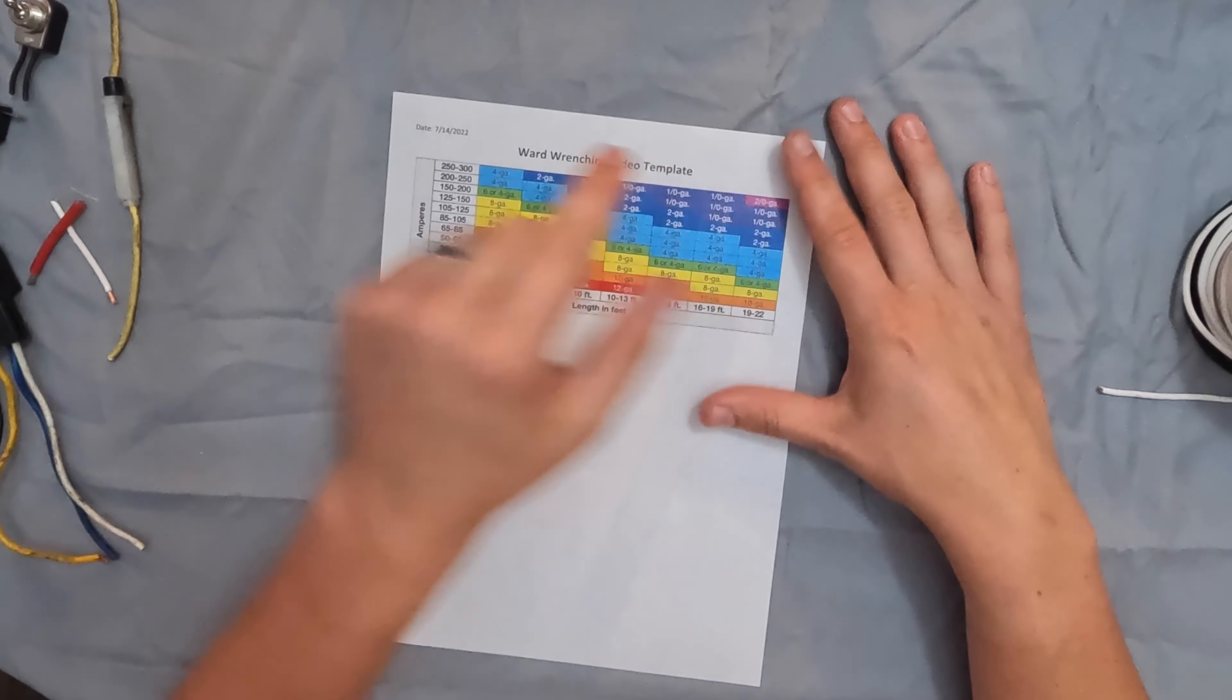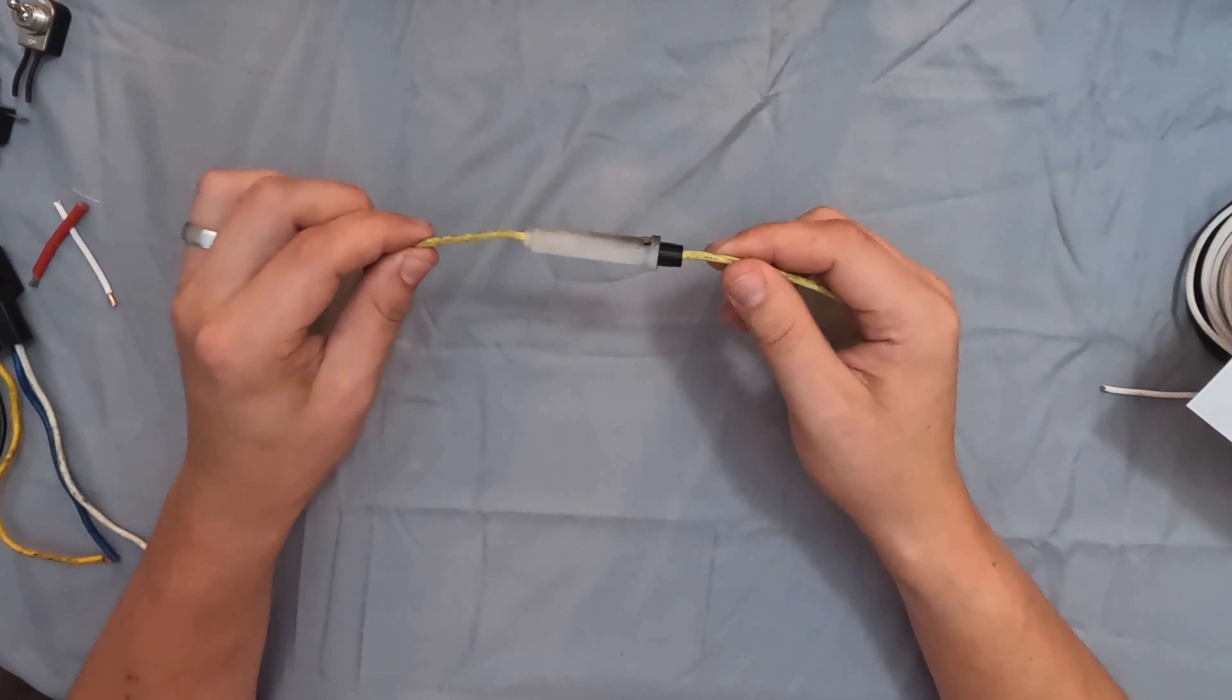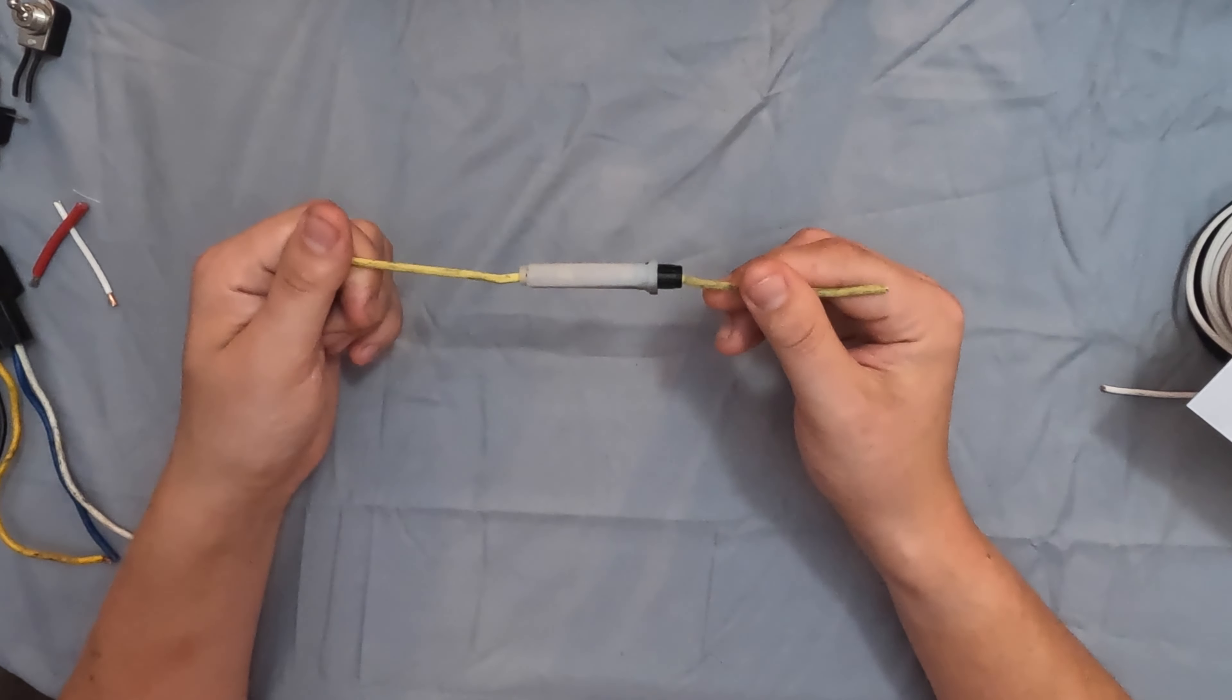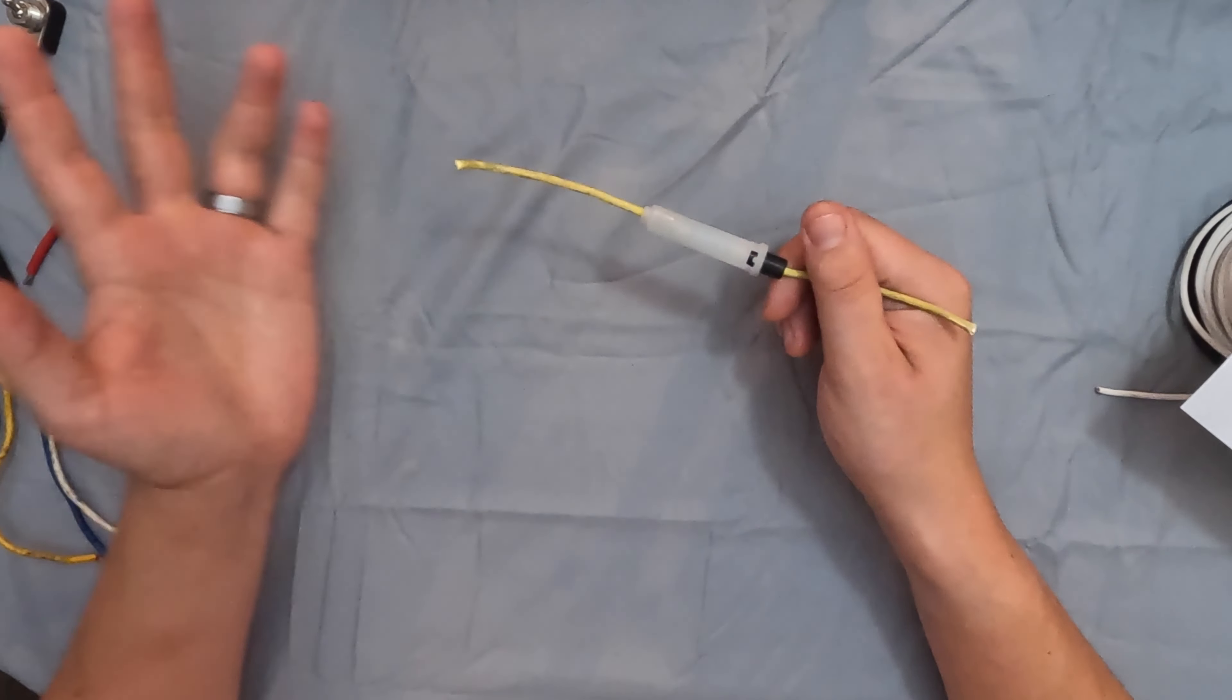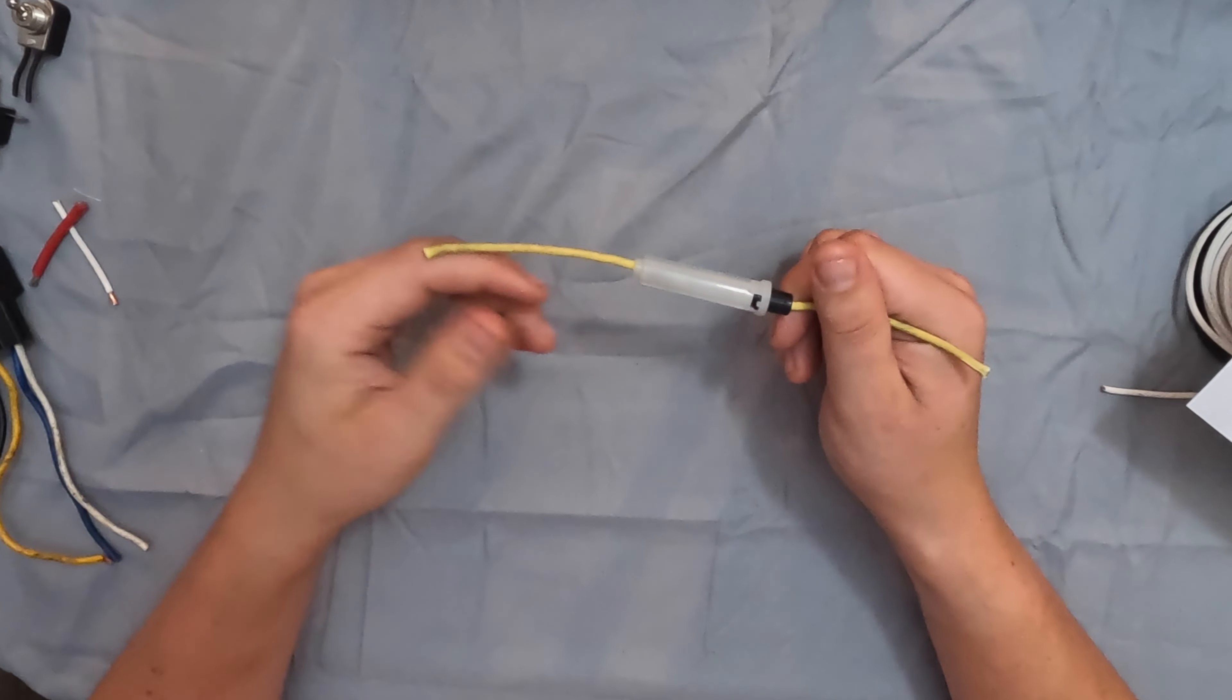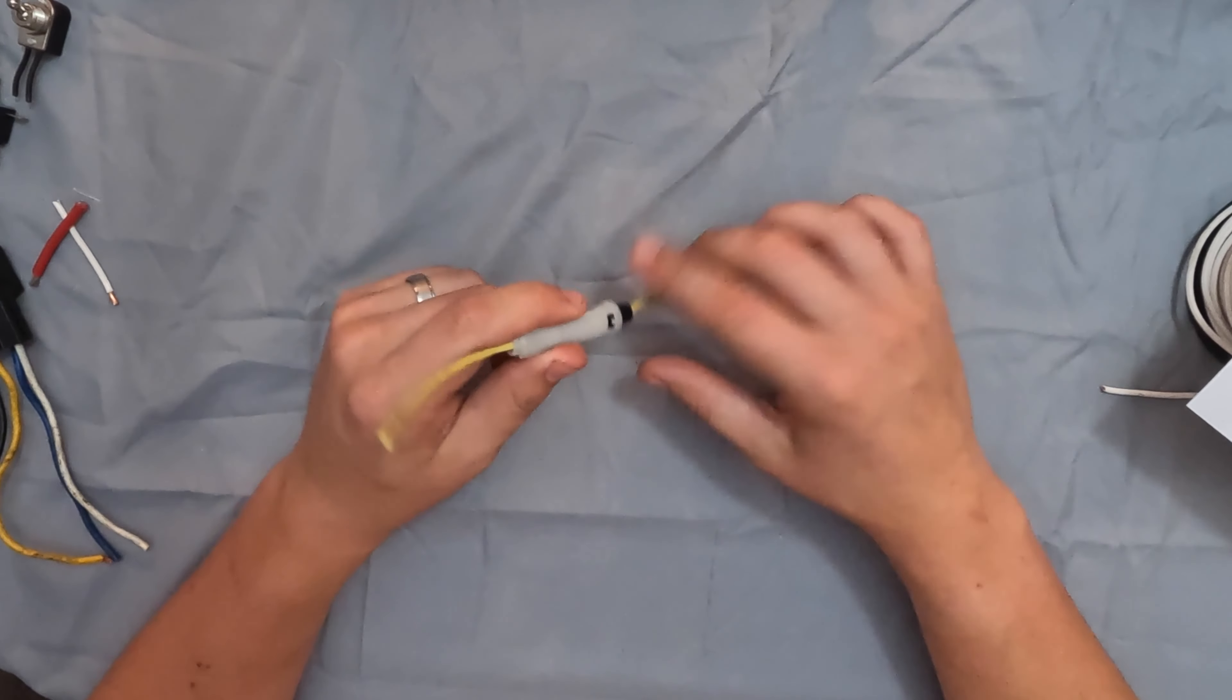So make sure you put a fuse in line with your certain items. So on my fuse boxes, each of them, I have an 80 amp and a 100 amp fuse. Because I have two fuse boxes and one of the fuse boxes I know is running close to a hundred amps of max draw if everything was on and the other one's at about 80. So that's why I have those fuses set up so I can have those fuses to blow before the fuse box fails.